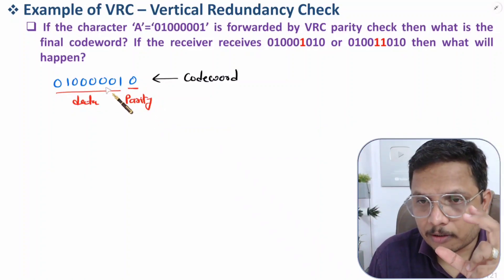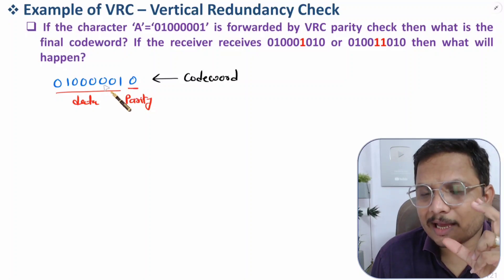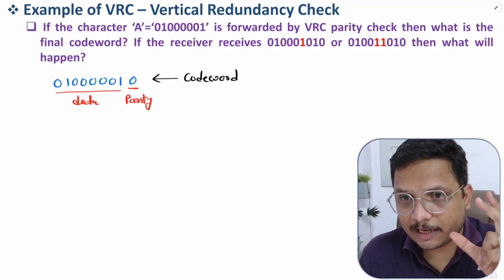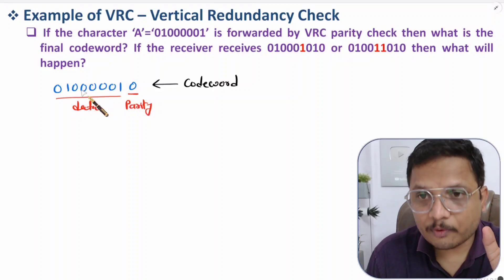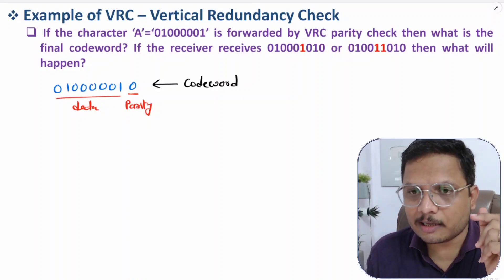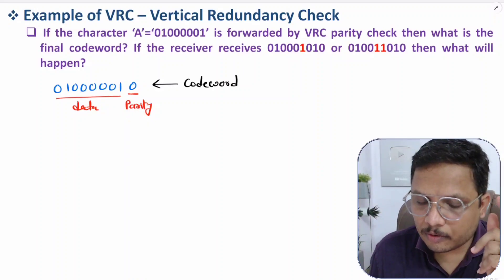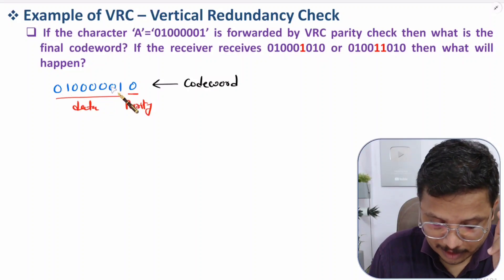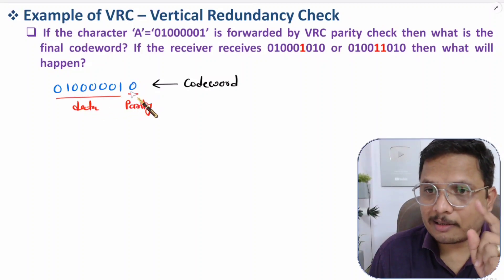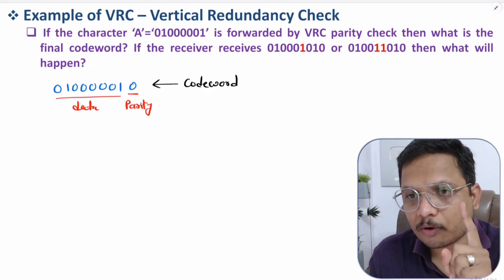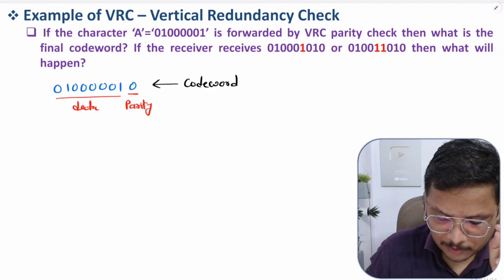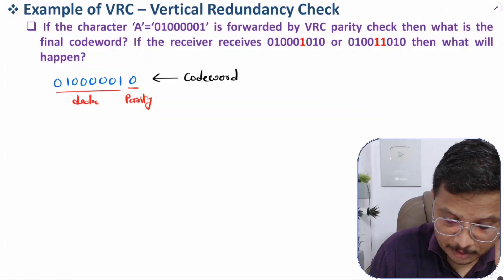By default, we are calculating for even parity. If they ask for odd parity, then if there is an even number of ones in the data, the parity bit will be one — that is the situation to handle for odd parity. Remember this distinction between even and odd parity.